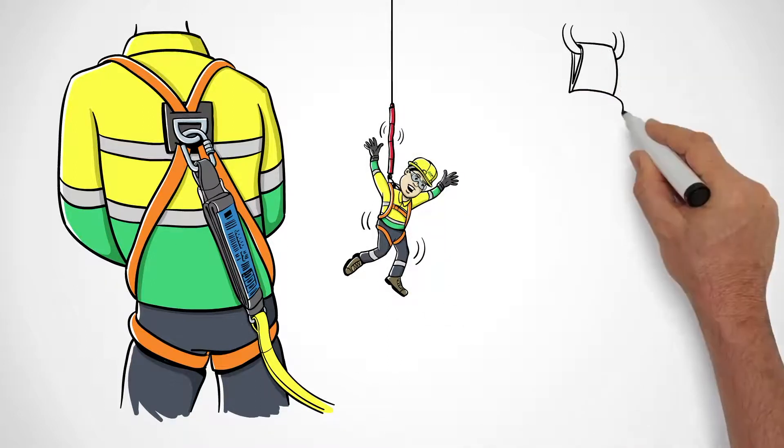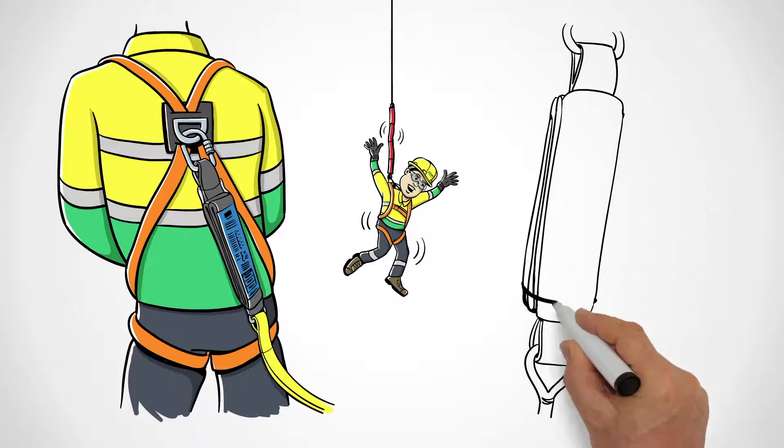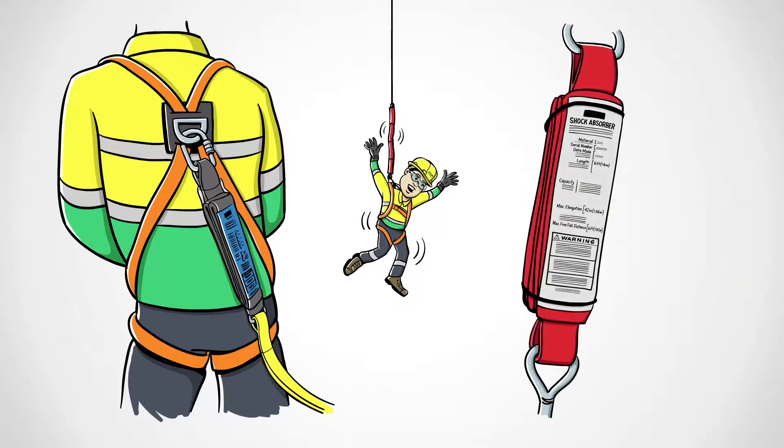The most common is the stitch webbing type which is folded over on itself and stitched in a pattern that upon activation will break the stitching in a controlled way.